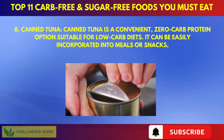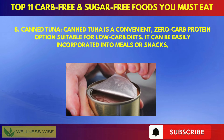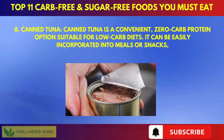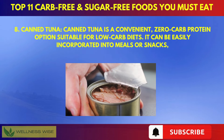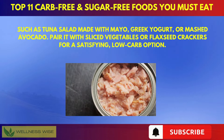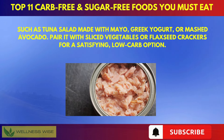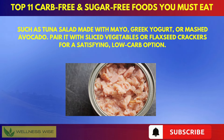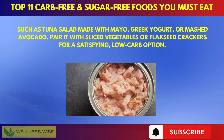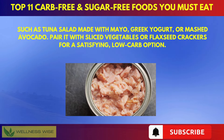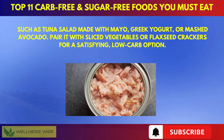Eighth, canned tuna. Canned tuna is a convenient, zero-carb protein option suitable for low-carb diets. It can be easily incorporated into meals or snacks, such as tuna salad made with mayo, Greek yogurt, or mashed avocado. Pair it with sliced vegetables or flaxseed crackers for a satisfying, low-carb option.